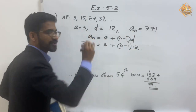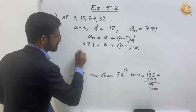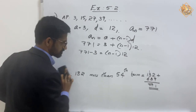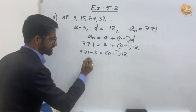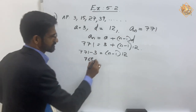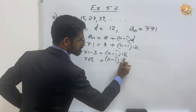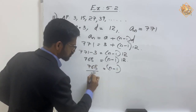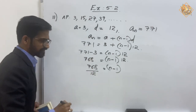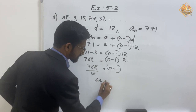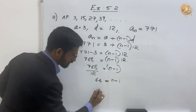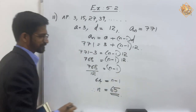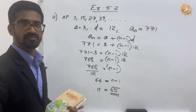With an equal to 771, taking 3 to the other side: 771 minus 3 equals (n minus 1) into 12. So 768 equals (n minus 1) into 12. Therefore n minus 1 equals 768 divided by 12, which is 64. Finally, n equals 64 plus 1, that is 65.